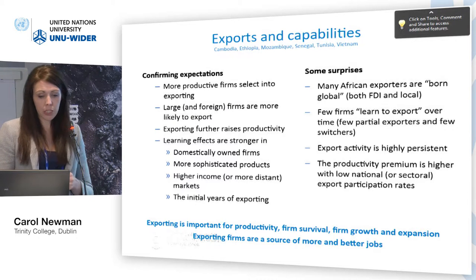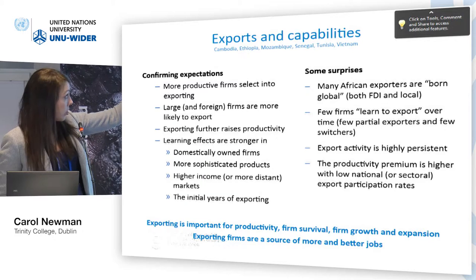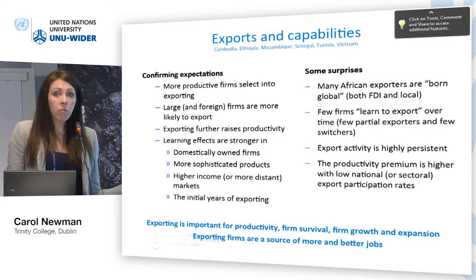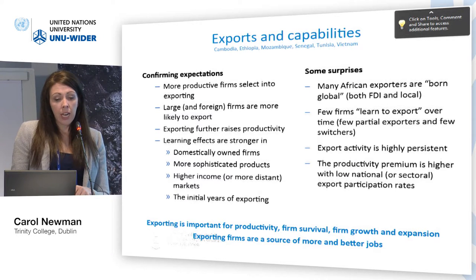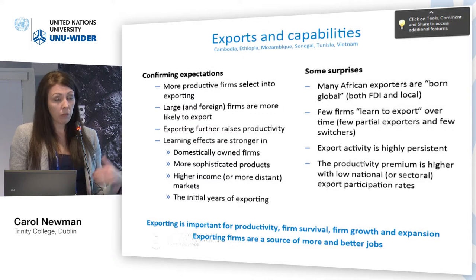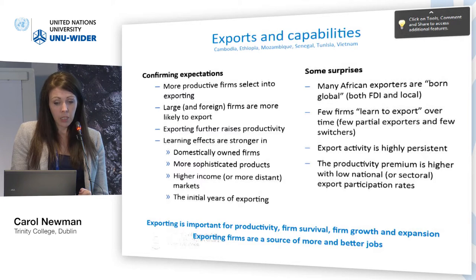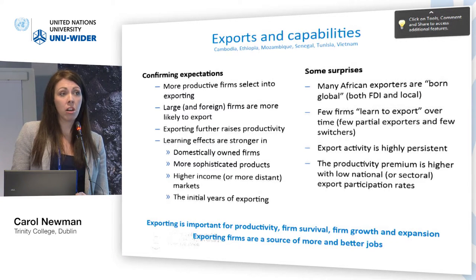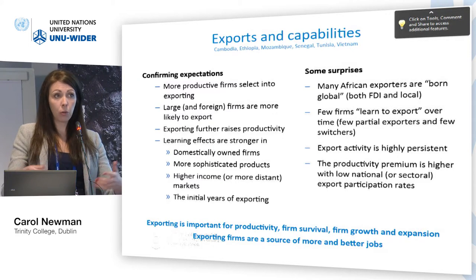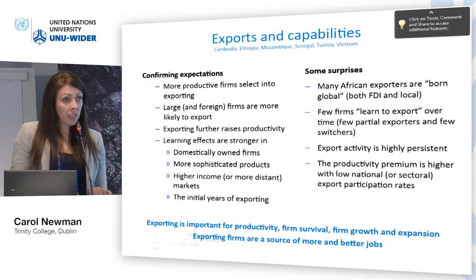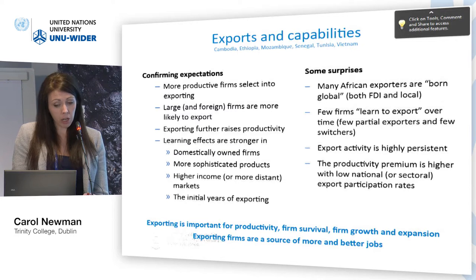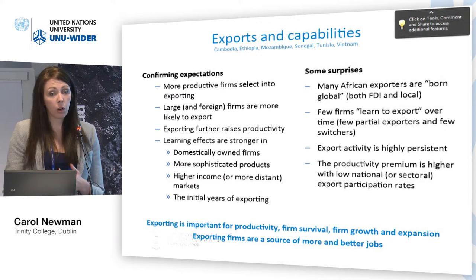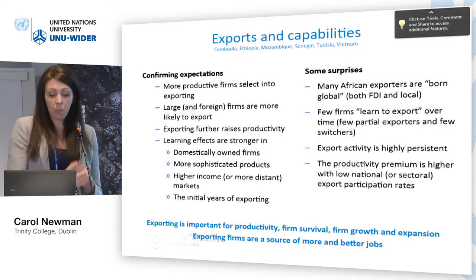A similar story relates to exporting. We did a number of studies on learning by exporting and the extent to which firms learn by exporting. As expected, more productive firms select into exporting to begin with — large firms and foreign firms are more likely to be the exporters. But we also found strong evidence of learning effects from exports: even controlling for selection, firms that export become more productive as a result of that process. These learning effects were stronger for domestically owned firms engaged in export markets, stronger where exporting more sophisticated products, stronger where exporting to higher income or more complex markets, and stronger in the initial years of exporting.